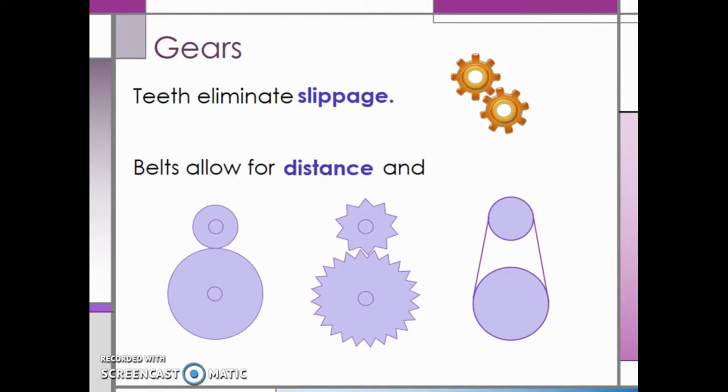Belts are used to allow for distance between two shafts, and they also help change the direction of rotation of the shafts.